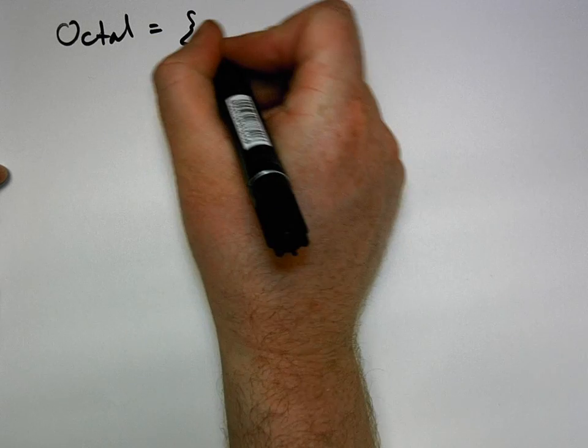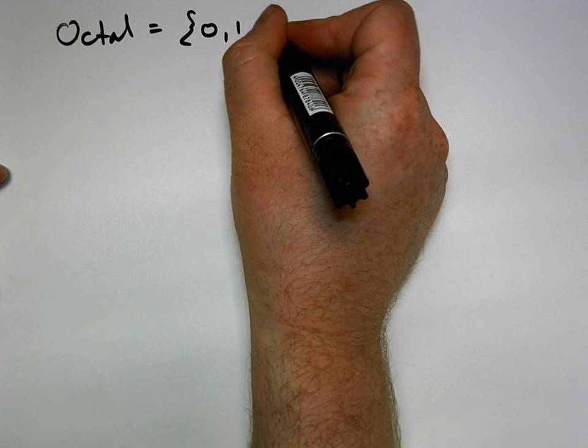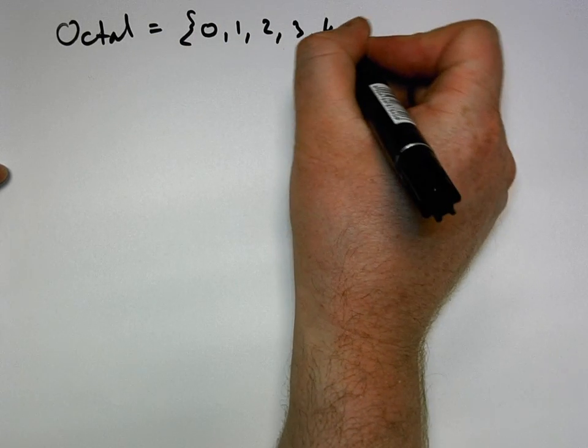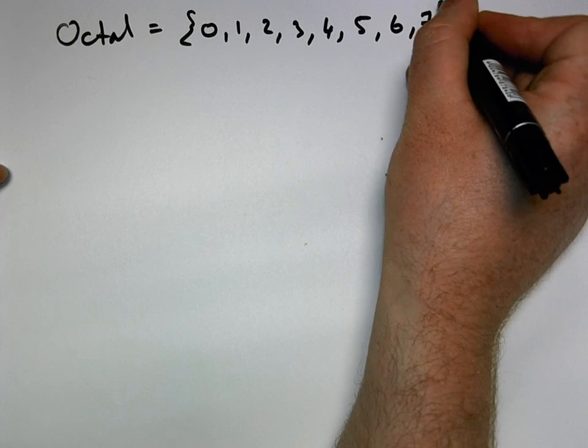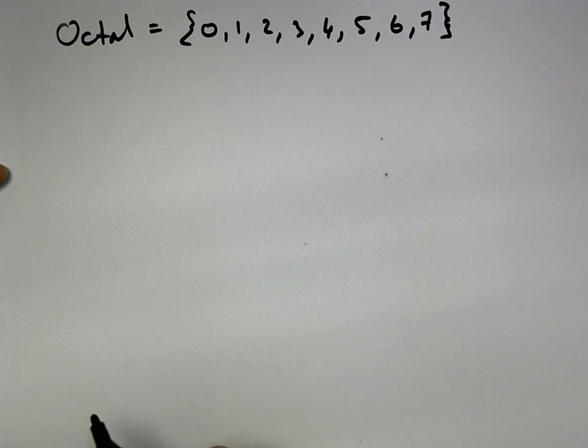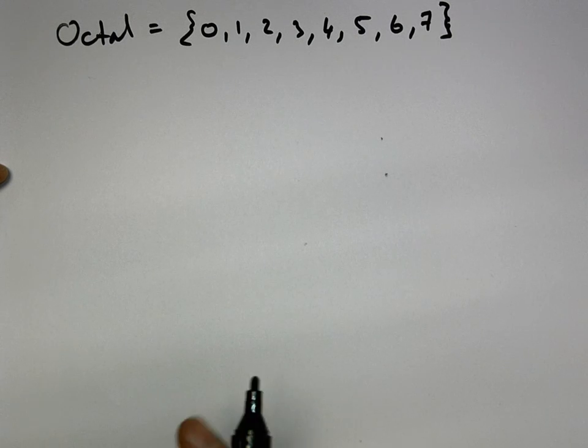The octal alphabet goes 0, 1, 2, 3, 4, 5, 6, 7. Let's call it the octal alphabet because we have 8 elements in our alphabet.